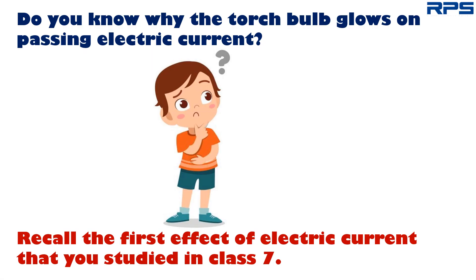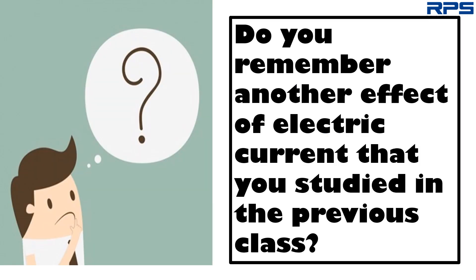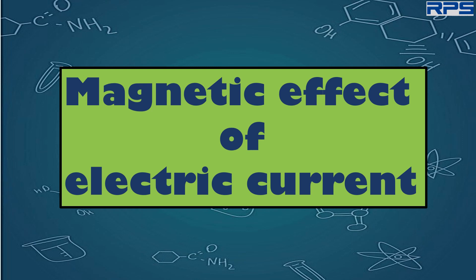Do you know why the torch bulb glows on passing electric current? Recall the first effect of electric current that you studied in class 7 — the torch bulb glows due to the heating effect of electric current. Do you remember another effect of electric current studied in the previous class? That was the magnetic effect of electric current. Let's try to make a tester by using this effect of electric current.